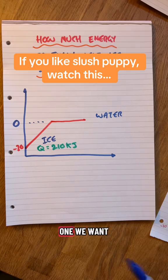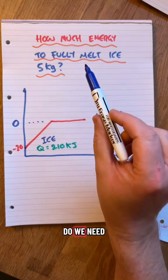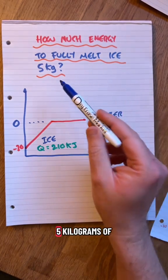Here's part two. So in this one we want to work out how much energy we need to fully melt five kilograms of ice.